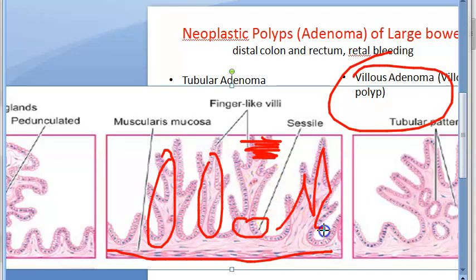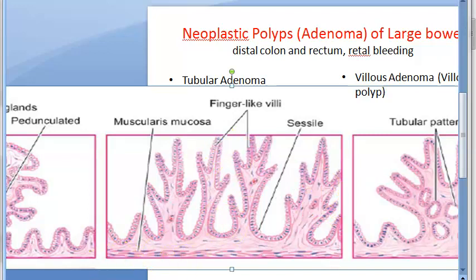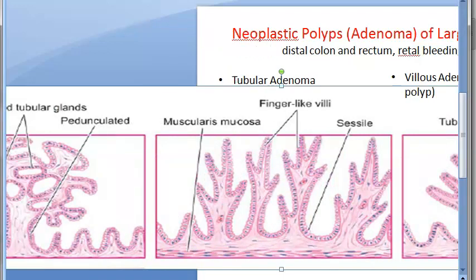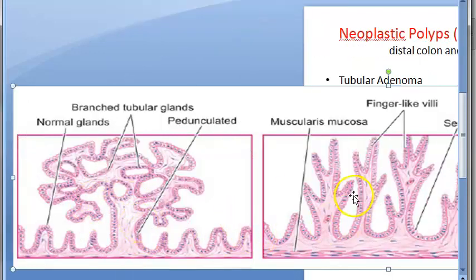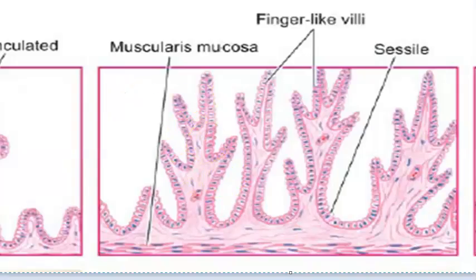Microscopically, villous adenoma shows finger-like villi arising directly from the muscularis mucosa. Each of the papillae has a fibrovascular stromal core — an important feature. There is a blood vessel within each papilla. There can also be hemorrhage and ulceration.